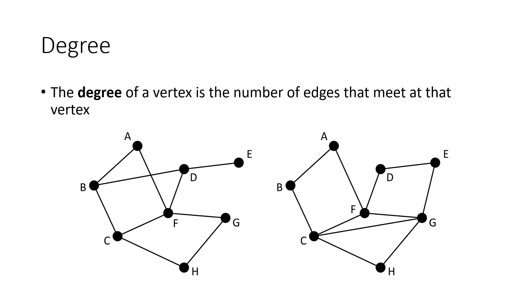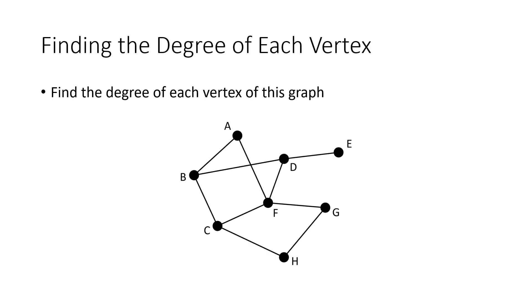It turns out that the thing we need to look at to understand why certain graphs do have Euler circuits and others don't is degree. When you have a graph, the degree of a vertex is the number of edges that meet at that vertex. That turns out to be an important concept. So let's look at this graph — the one that doesn't have an Euler circuit — and look at the degree of each vertex. I'm going to do these in alphabetical order.